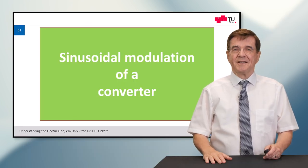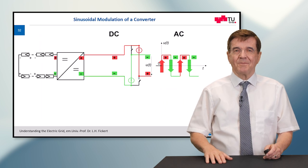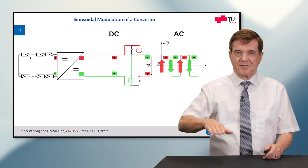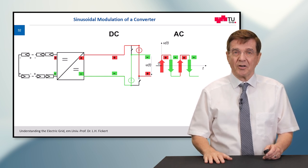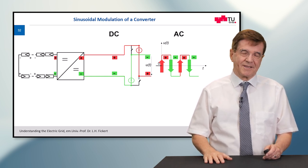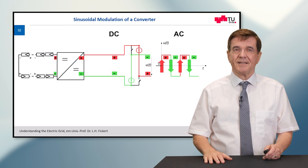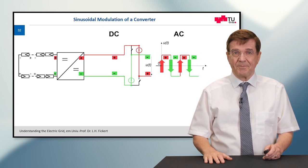But as you have seen, this is quite a sharp change of the status. It goes up and down and the electrical power systems, the loads, also the transformers, they do not like this sharp rectangular shape of the voltage.